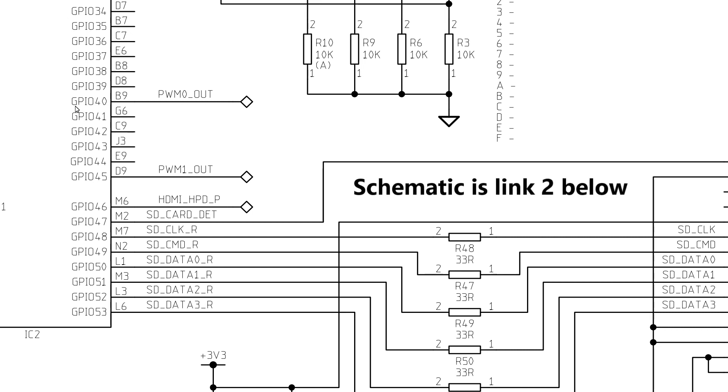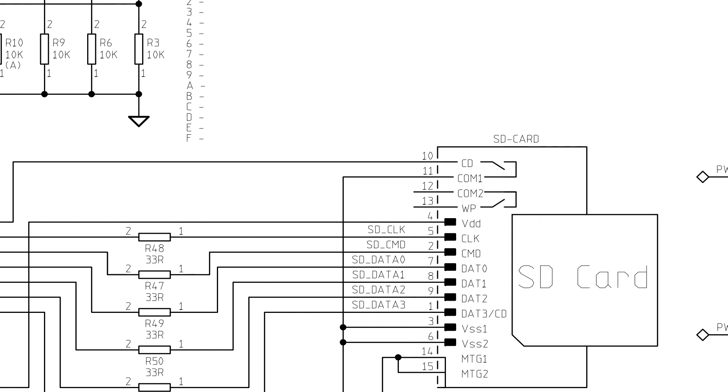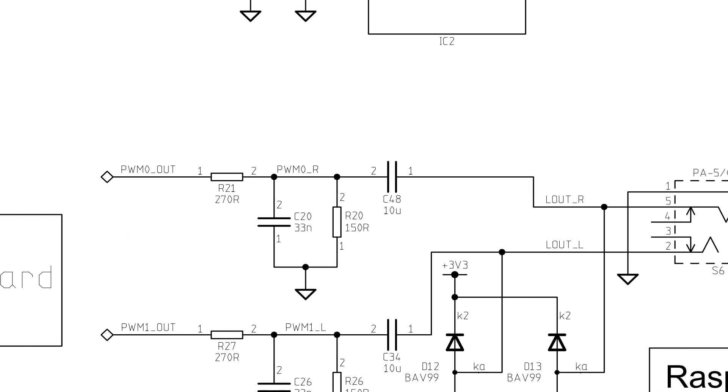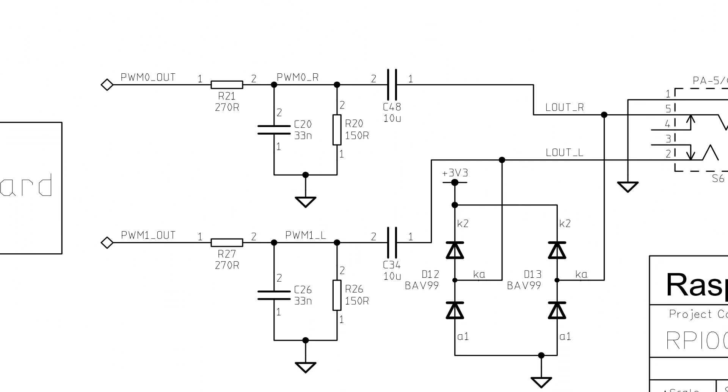So the Pi gets analog headphone audio from the PWM pins. Here's the Raspberry Pi and here are those two pins labeled PWM0 and PWM1. They route over here to a few components that make up the low pass and high pass audio filters, and then they lead straight to the headphone jack.